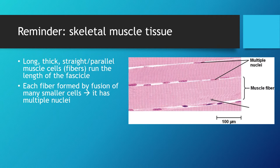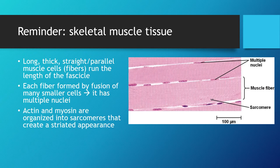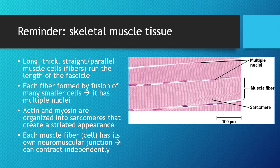Each fiber is ultimately formed by the fusion of many smaller cells, so it retains multiple nuclei. The nuclei are all pushed to the edge of the cell, out of the way, to allow the contracting machinery as much room to do its work. The actin and myosin are organized into structures called sarcomeres that have a repeating light-dark pattern creating a striated appearance. Each muscle fiber has its own neuromuscular junction, meaning they can, in theory, contract independently.